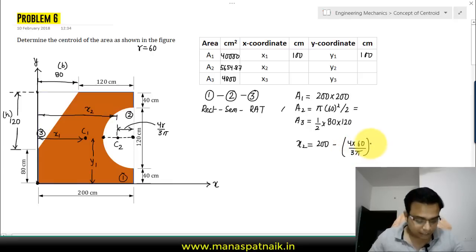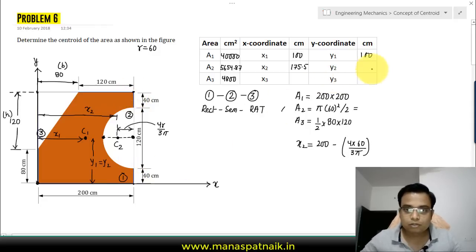The y value is pretty simple. y2 will also equal y1, and this is going to be equal to 100. From here to here it's 200, so half of 200 will be 100.